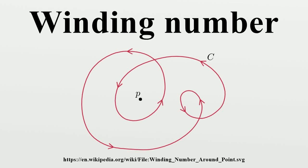The term winding number may also refer to the rotation number of an iterated map. In mathematics, the winding number of a closed curve in the plane around a given point is an integer representing the total number of times that curve travels counterclockwise around the point.